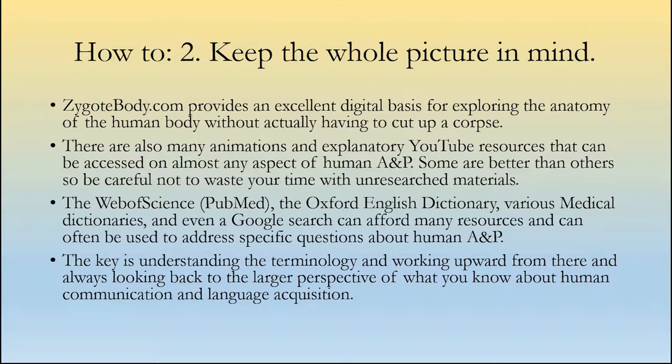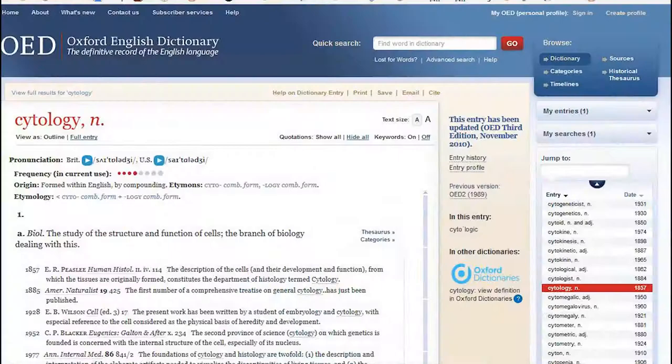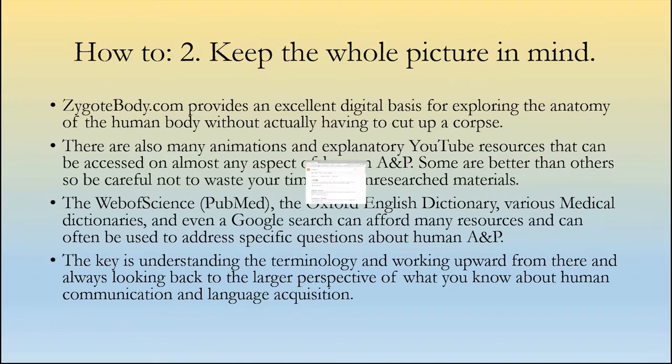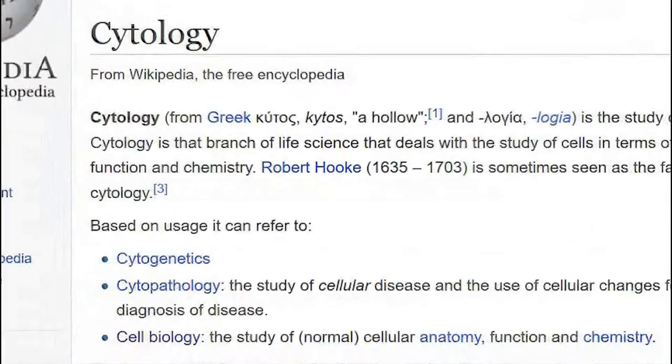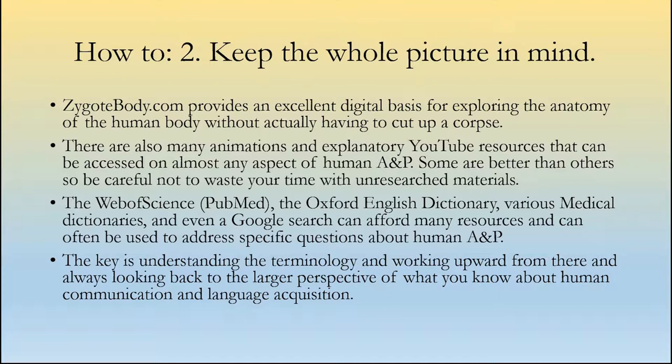Look for resources that have references or are consistent with what you're learning in the course. You can also use the Web of Science, PubMed, and the Oxford English Dictionary, which contains a wealth of information even about technical medical terms. Medical dictionaries, Google searches, and wiki searches can afford many resources to address specific questions about terminology or specific parts of human anatomy and physiology. The key is understanding the terminology, working upward from there, and always looking back to the larger perspective of human communication and language acquisition.